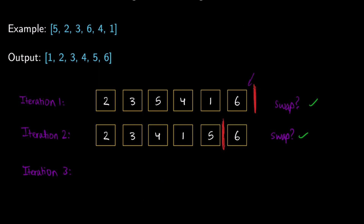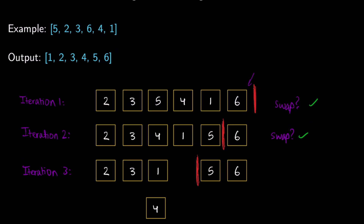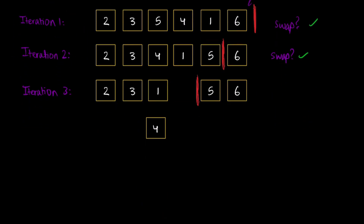For iteration 3, we move the end index down and now only iterate through the first four elements. 2 is less than 3 — that works. 3 is less than 4 — that works. 4 is greater than 1, so we have to swap those. We did perform a swap, so we move our end index down again. We can see that 4, 5, 6 are now the last three numbers in correct order.